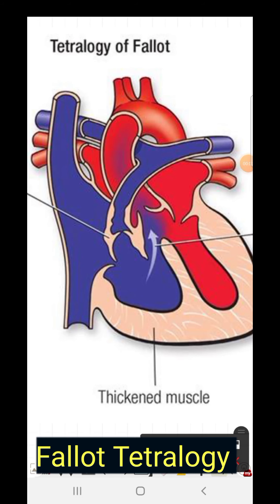Today we will discuss tetralogy of Fallot. It is the most common congenital cyanotic heart disease and it has the most favorable outcome. The four essential components are pulmonary stenosis, ventricular septal defect, right ventricular hypertrophy, and overriding of the aorta.